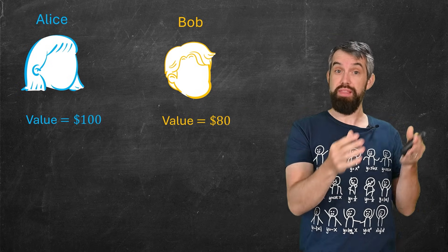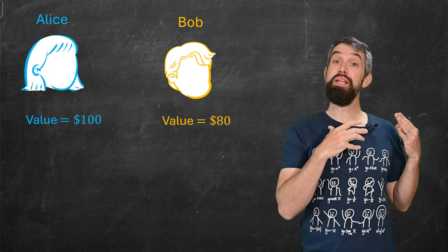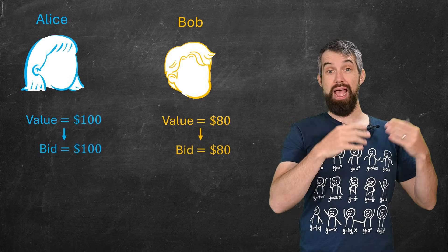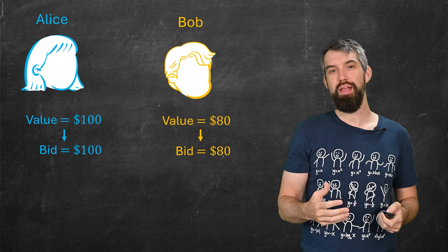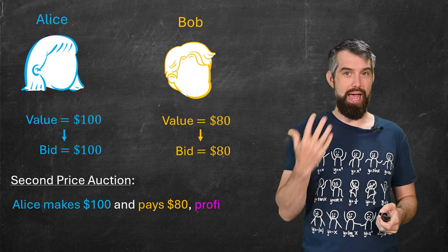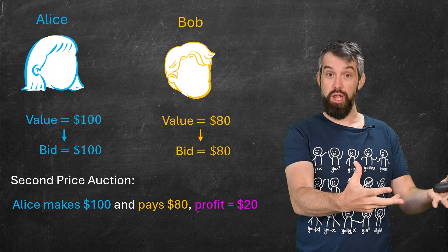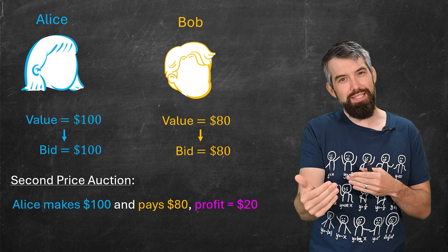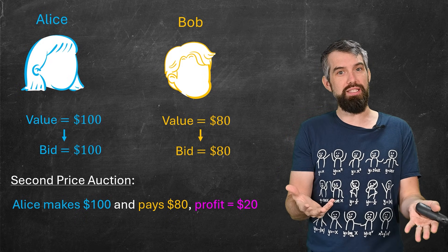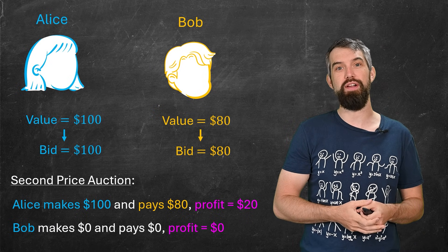For example, Alice might think that this advertising spot will generate $100 in revenue. So if they bid truthfully, like Alice values it at $100 and bids $100, same for Bob. Then in a second price auction, Alice makes $100 because that's what the value of the advertising that she gets is. She pays $80 and then her net profit is thus $20. Bob lost and so he has no dollars of profit.